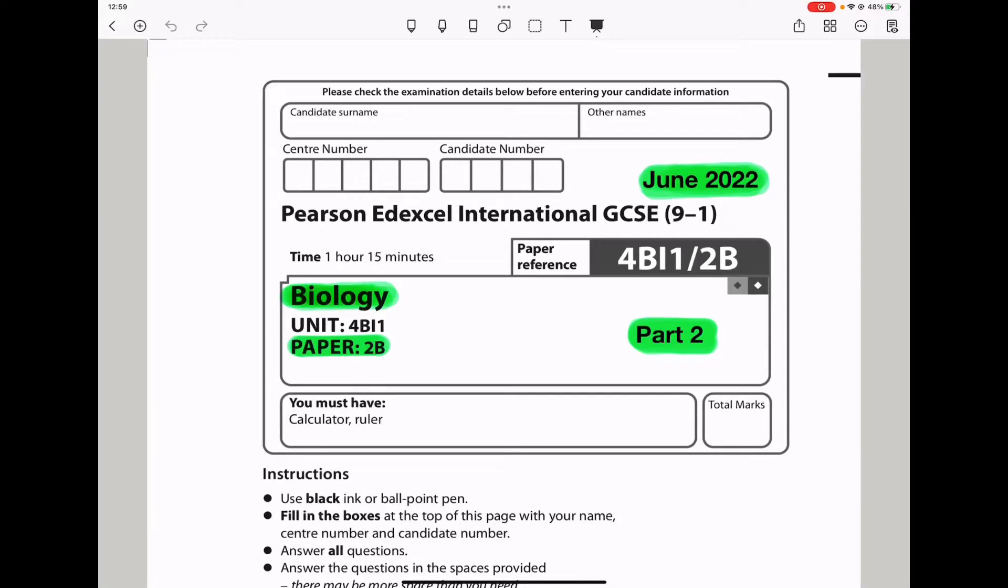Welcome to the Chemistry, Biology and Math Revision Hub. Today we are working through the Pearson Edexcel International GCSE Biology Paper 2B for June 2022. This is the Part 2 video. I'll put the link to the Part 1 video below the description box.